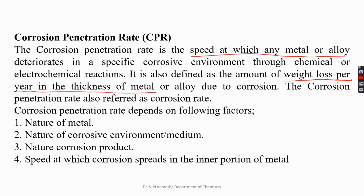The corrosion penetration rate depends upon the nature of the metal, which decides the corrosion rate; the nature of the corrosion environment or medium, which decides the corrosion rate; the corrosion product formed on the surface of the metal; and the speed at which the corrosion spreads into the inner portion of the metal, which tells about the penetration rate.